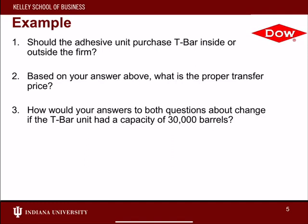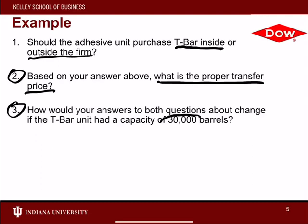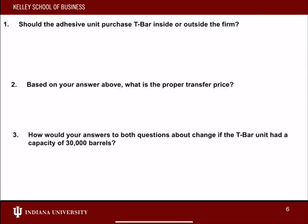The questions are: should the adhesive unit purchase T-bar from the T-bar division or from the outside firm? Based on that answer, what should the transfer price be set at? And how would that answer change assuming the T-bar division had more capacity? Let's work through it.